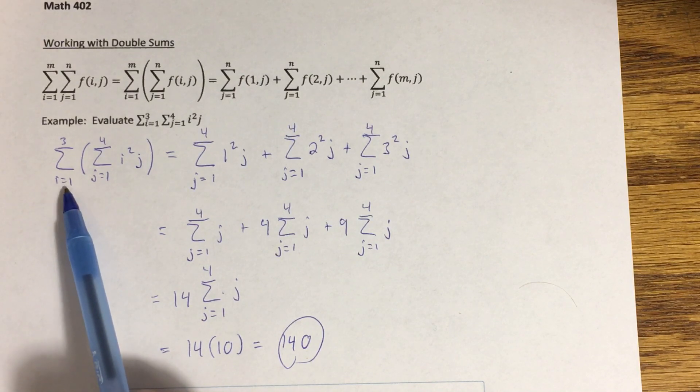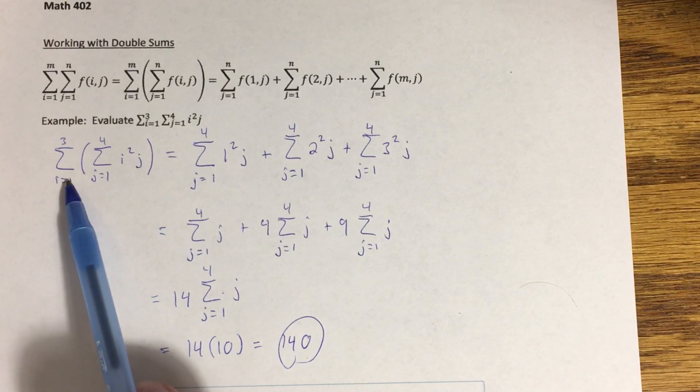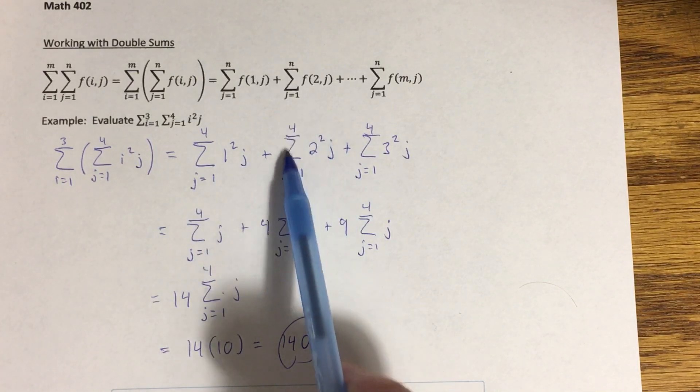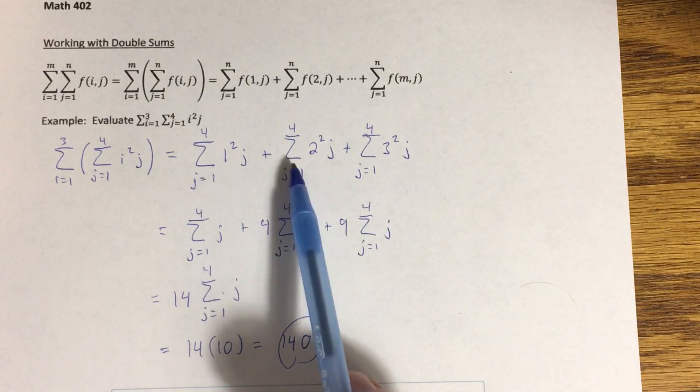I'm going to sum this up by plugging one in for the i here, creating this summation right here. Then I'll plug a two in for the i, creating this summation, and then a three in for the i, creating this summation, so total of three summations.